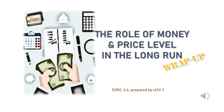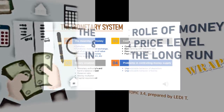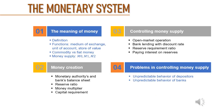Assalamualaikum warahmatullahi wabarakatuh. Good morning. The discussion today is about the role of money and price level in the long run. Most parts of the discussions are taken from chapter 29 and chapter 30 of the main textbook, Principle of Economics, and some parts especially when talking about money creation and monetary control, I took some explanation from another textbook. Before talking about how money could affect the price level in the long run, we need to understand the monetary system in an economy.